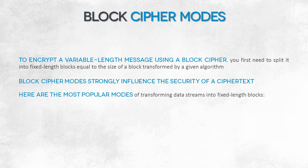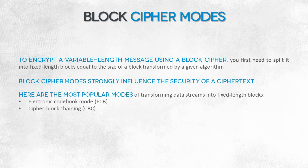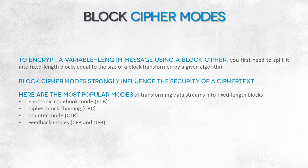How can you transform data streams into fixed-length blocks? There are several common block cipher modes of operation. The first is rather euphemistically called the electronic codebook mode, ECB. The second mode of operation is cipher block chaining, CBC. The third we'll cover is the counter mode, CTR. Finally, there are two similar modes of operation that we'll mention together — the so-called feedback modes, CFB and OFB.